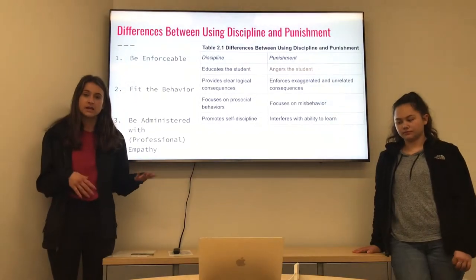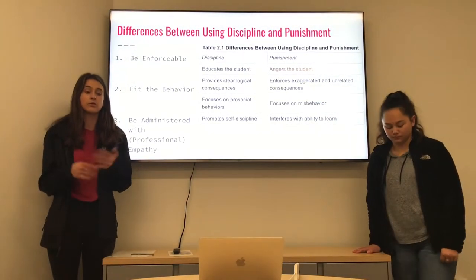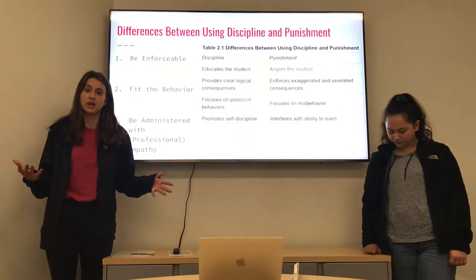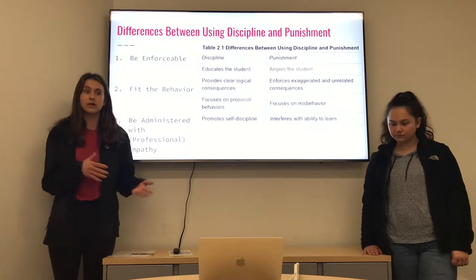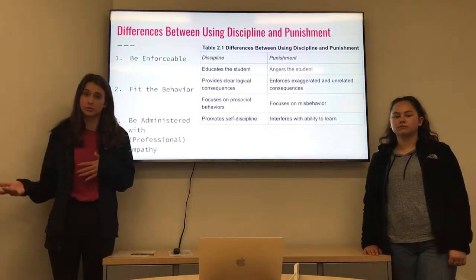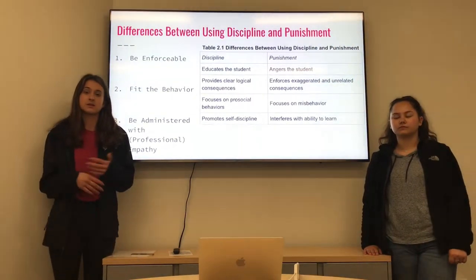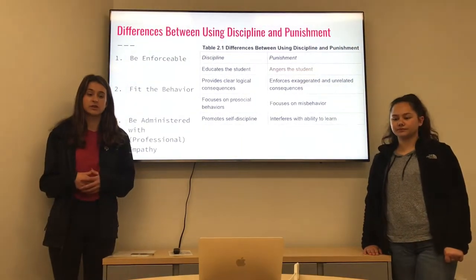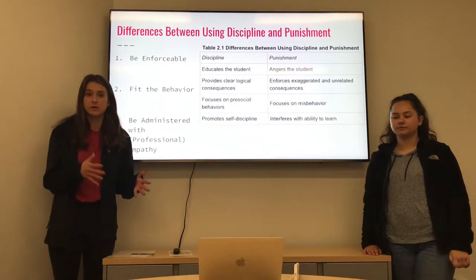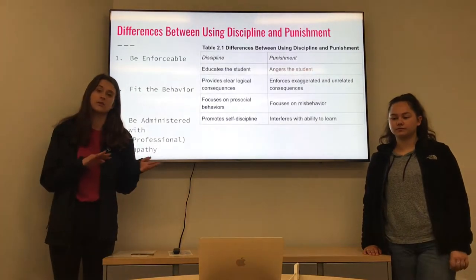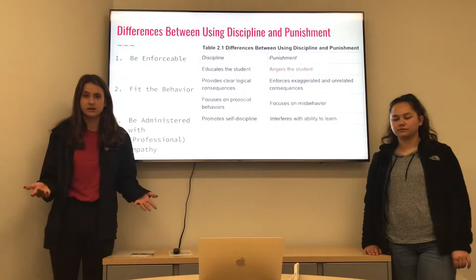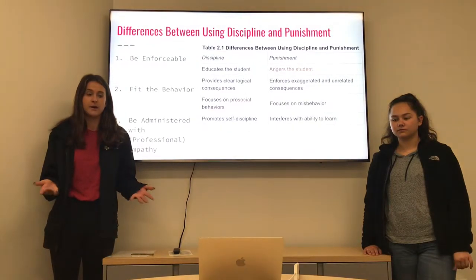Another difference is that with discipline you want to give a clear, logical reason — exactly what they're doing wrong and the steps to improve. Whereas with punishment, you're looking at what they're doing wrong and giving them a completely unrelated consequence, which again is not really going to help.